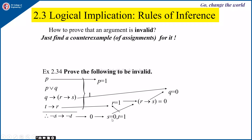Now by using s equal to 0 and t equal to 1, go back and check whether all the premises are true. Since t is 1, r also has to be 1. Now since r is known, s is known, and t is known, we have to find out the values of p and q. R is 1 which implies this is 1, and s is 0, so this is 0.